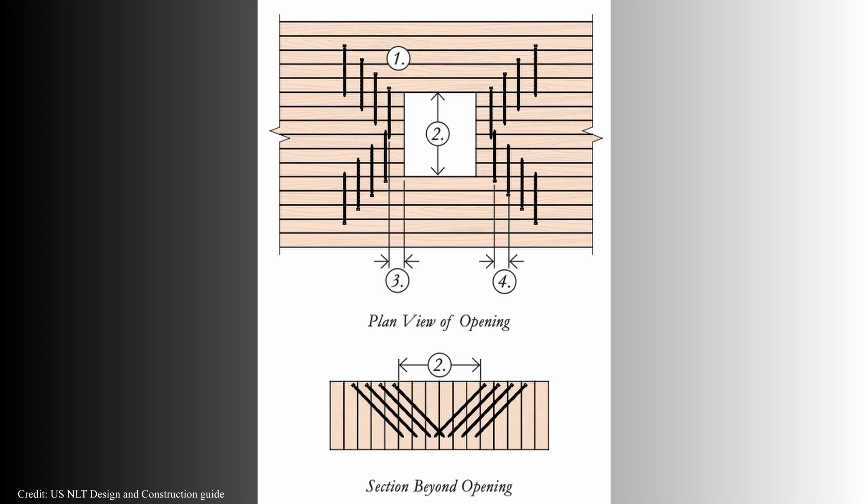Looking at information in the NLT design guide and DLT design guide, it ranges from very small openings where there's no reinforcement needed, up to inclined nails or screws to distribute loads to adjacent laminations.